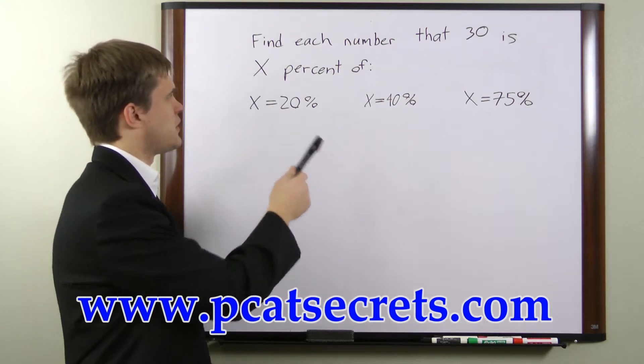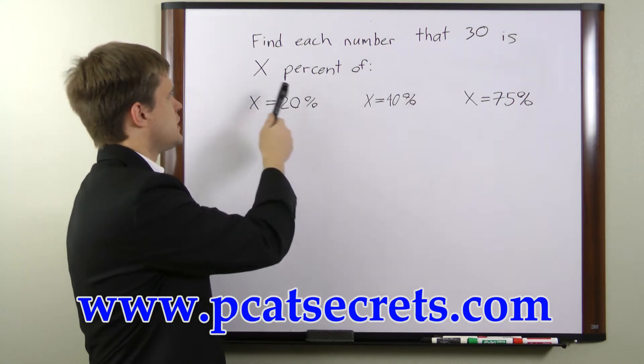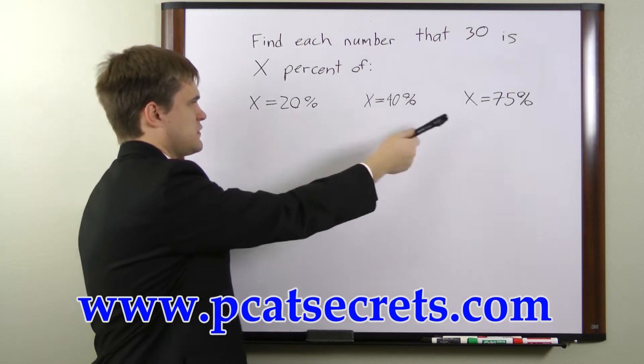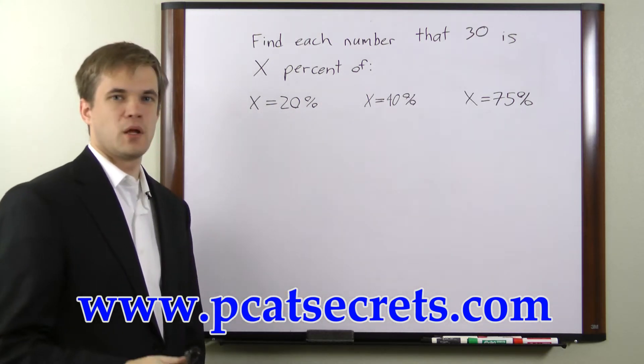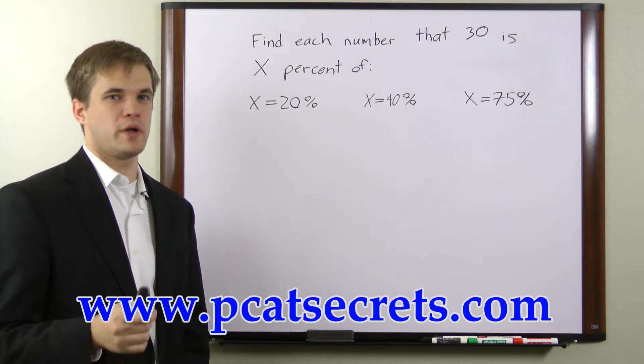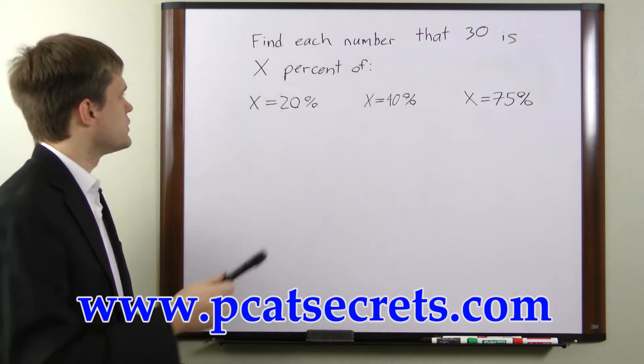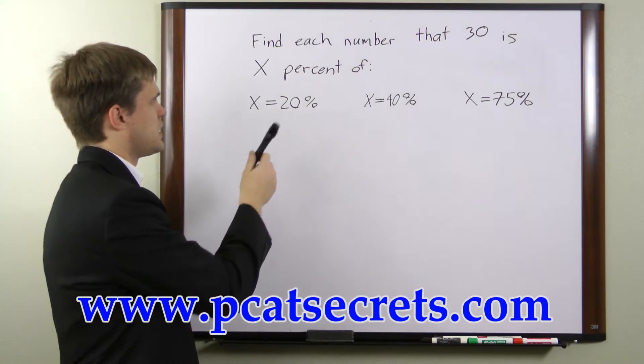we're asked to find the whole number that 30 is x percent of for each of these values of x. Now to do this, we need to figure out what equation to use. We'll use a to represent the number we're looking for.